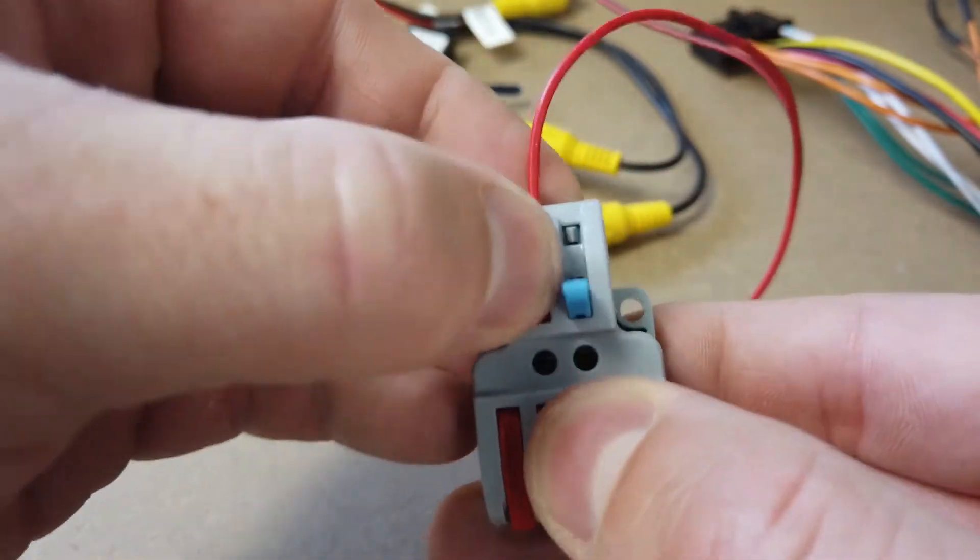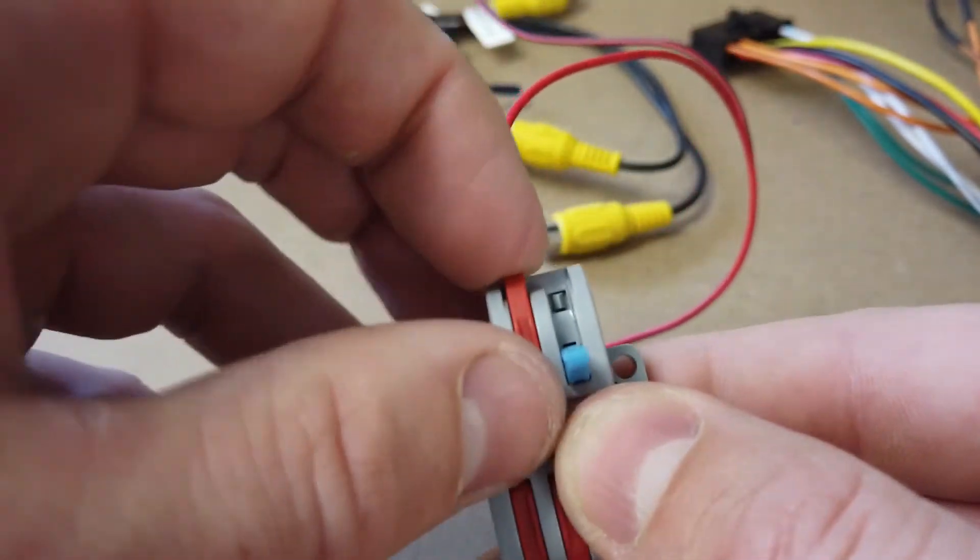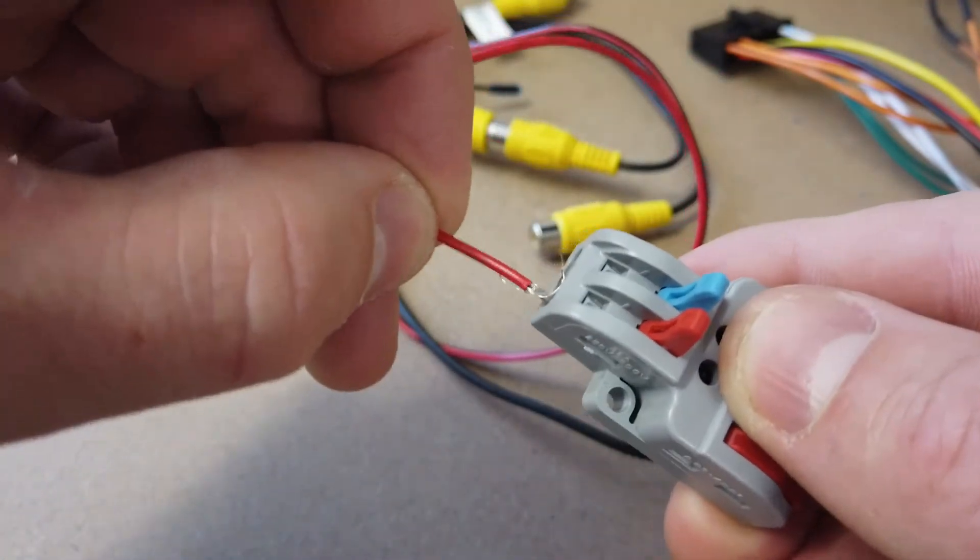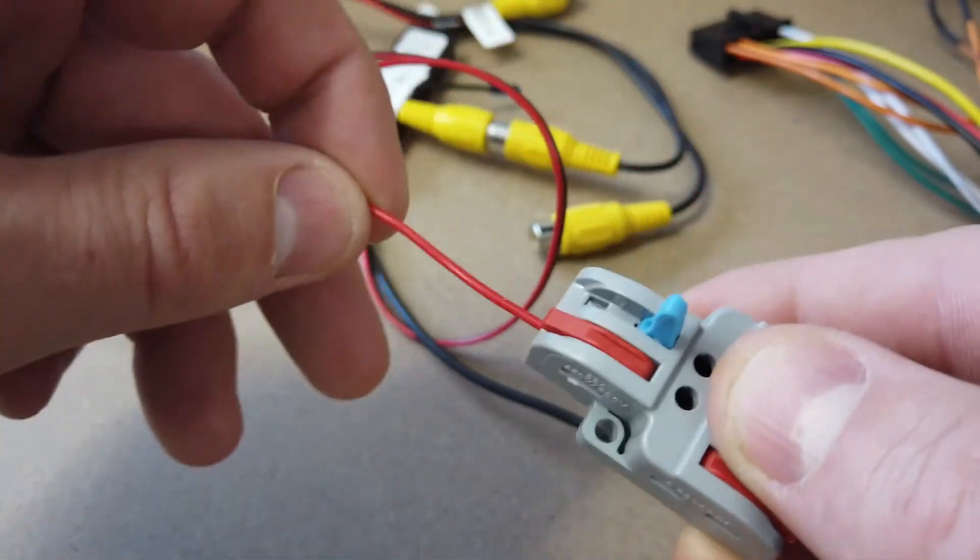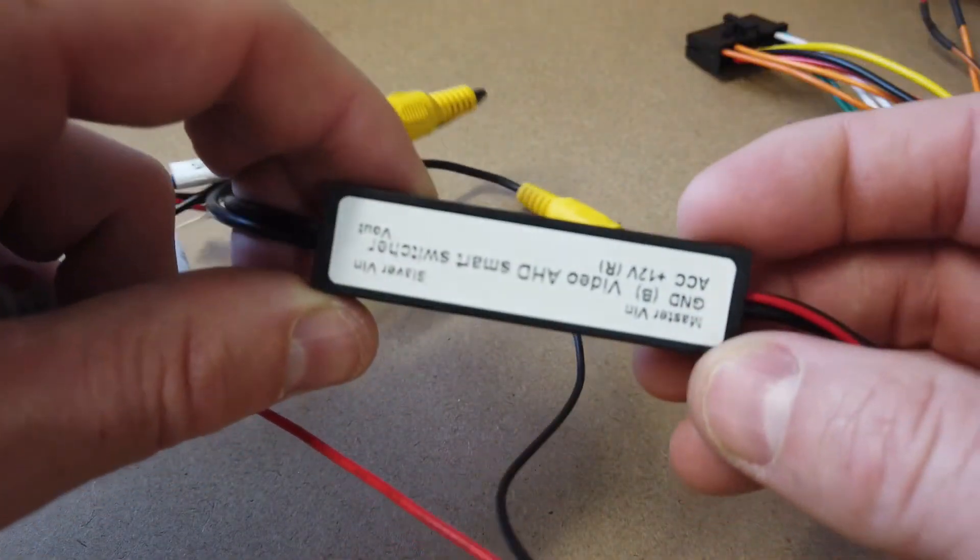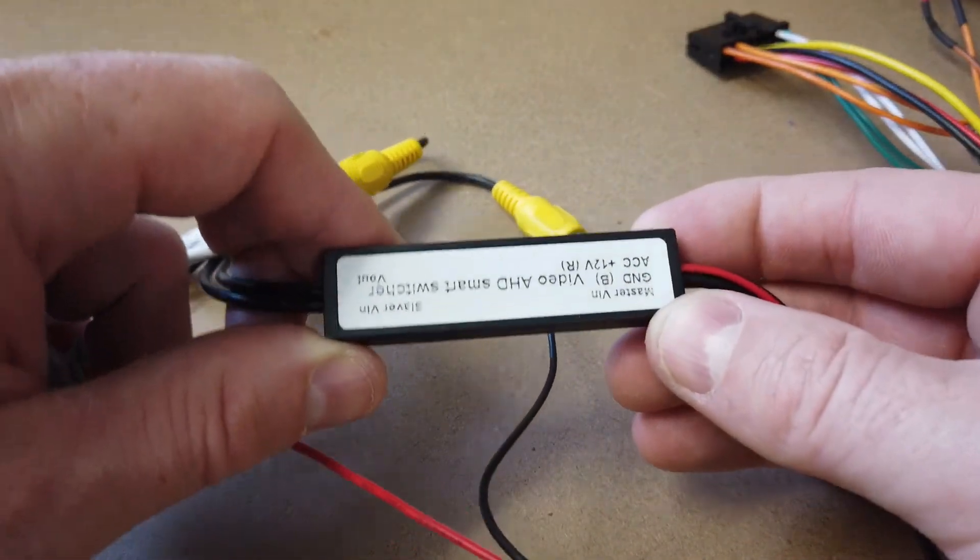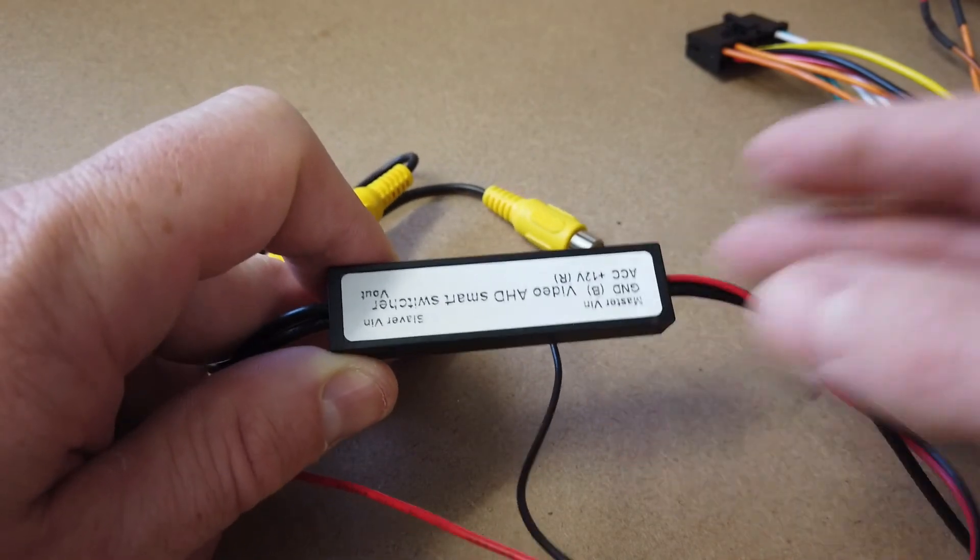These are pretty easy to use - just strip the wire, put it in, lock it down, and that's done. So that's our smart video selector, which allows you an easy way to get your caravan or trailer camera coming up when you're in reverse.